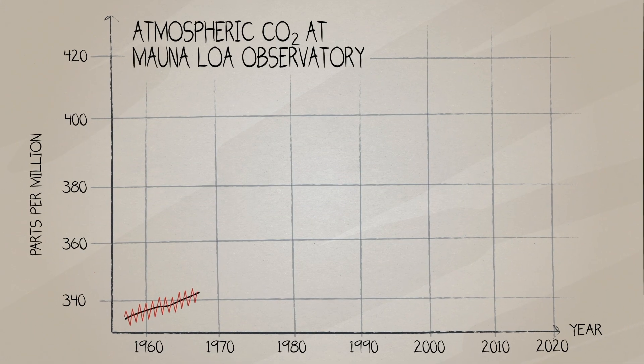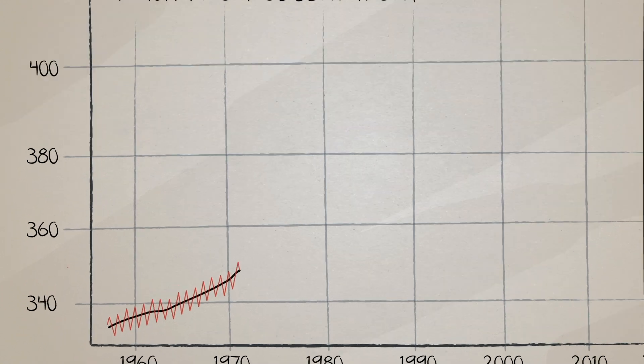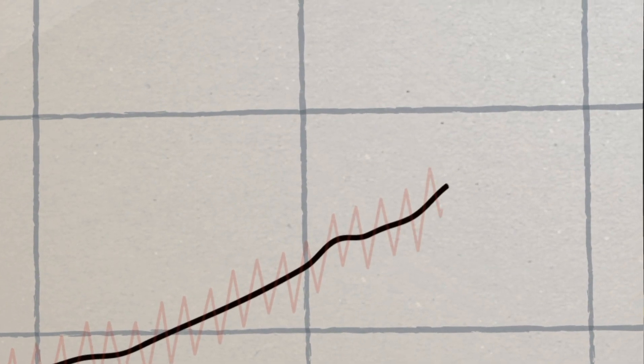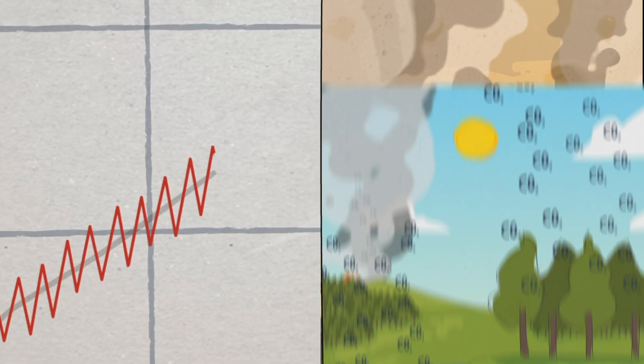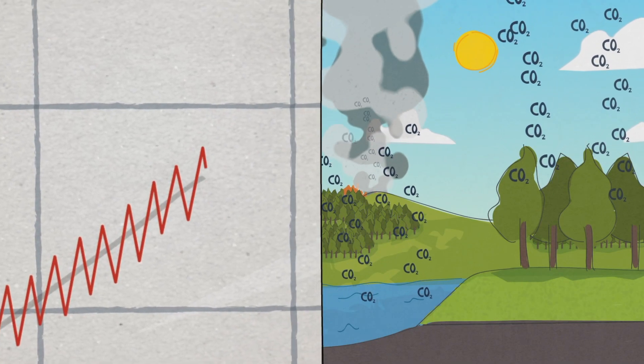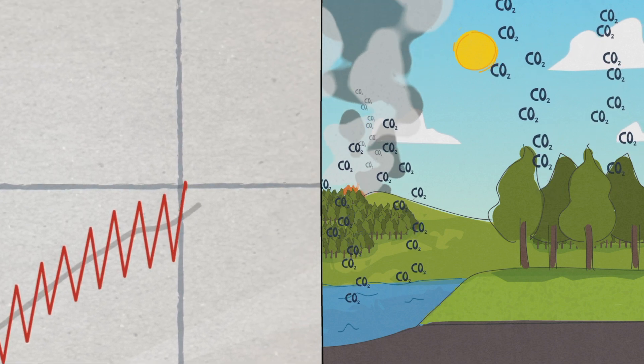This graph shows two pieces of information. The black line depicts the overall upwards trend caused by human activities. The red zigzag shows the increases and decreases caused by the Earth's natural carbon cycle.